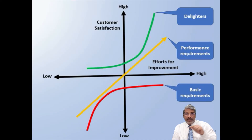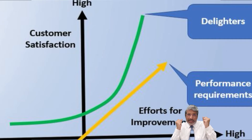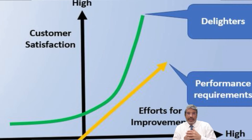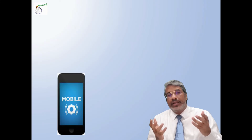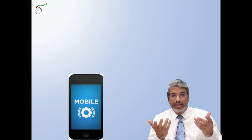The third type of requirement is called delighters, which are features not normally provided by competitors or existing product designs — things that go beyond the current state of the art. For example, when touch phones came and replaced button phones, touch technology was a delighter. Similarly, voice recognition and artificial intelligence-based suggestive actions are also delighters nowadays.